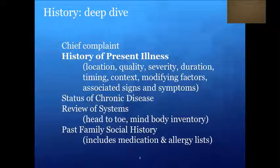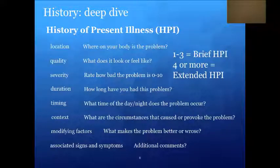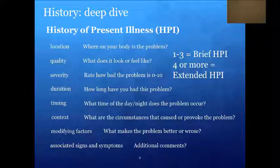History of present illness. The HPI is the equivalent of journalism's who, what, when, where, and how. It has eight components: location — where is it on your body; quality — what does it look or feel like; severity — how do you rate this problem, such as on a scale from 0 to 10; duration — how long have you had the problem; timing — what time of the night or day does the problem occur; context — what are the circumstances that caused or provoked the problem; modifying factors — what makes the problem better and or worse; and associated signs and symptoms. One to three components is a brief HPI; four or more is an extended HPI.